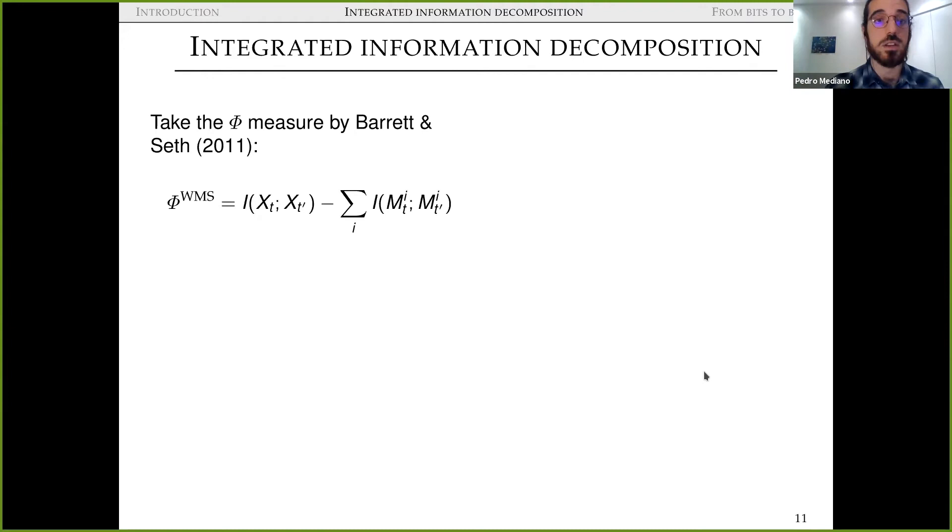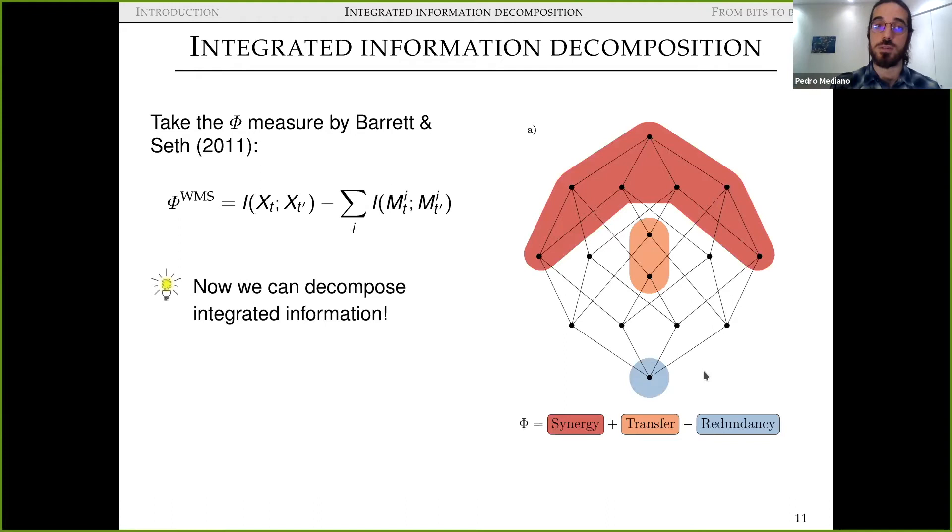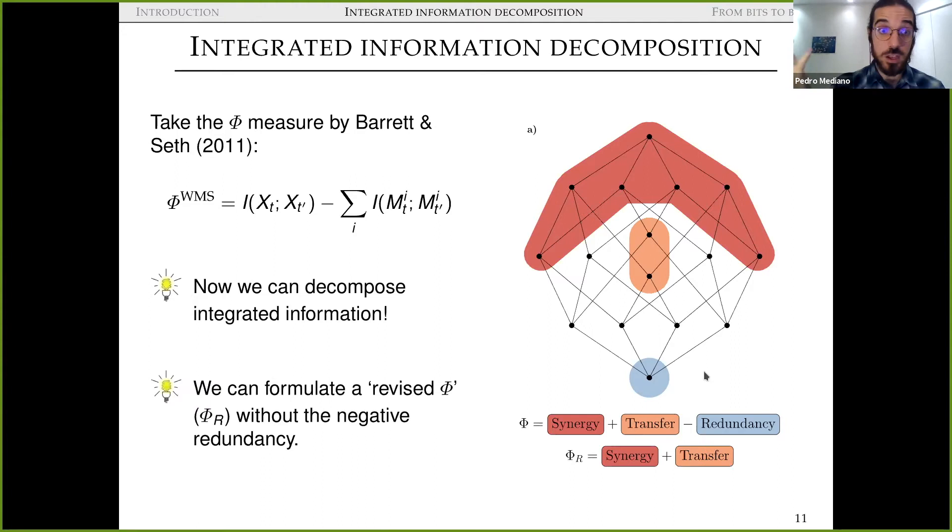So we can basically go and apply the whole phi-ID machinery to this quantity. And lo and behold, we can actually decompose this into information. We can see that actually the whole minus sum phi is not a monolithic construct, but it's actually an amalgamation of these different phenomena. So it comprises the synergy. It also comprises information transfer between the two parts of the system. And it has this negative redundancy component, which can cause some weird behaviors that have been reported in the literature before. So we can do this, we can use this phi-ID machinery to formulate a revised phi, or phi-R, without the negative redundancy. And now we basically have almost a fraction of the total information that is carried either synergistically or transferred between the parts of the system. We can call this measure phi-R.